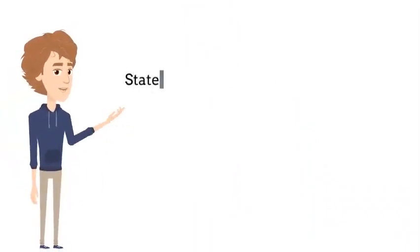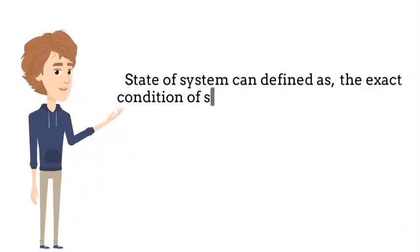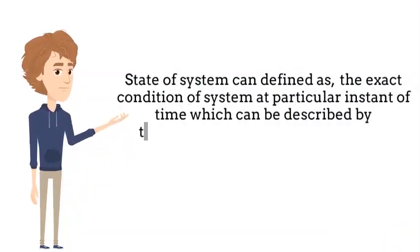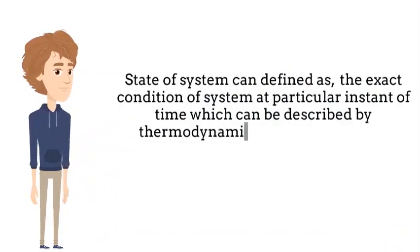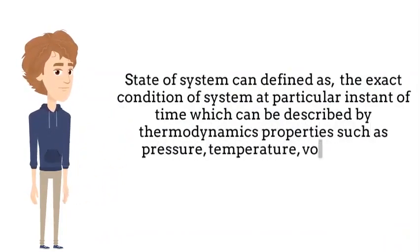State of System can be defined as the exact condition of a system at a particular instant of time, which can be described by thermodynamic properties such as pressure, temperature, volume, etc.